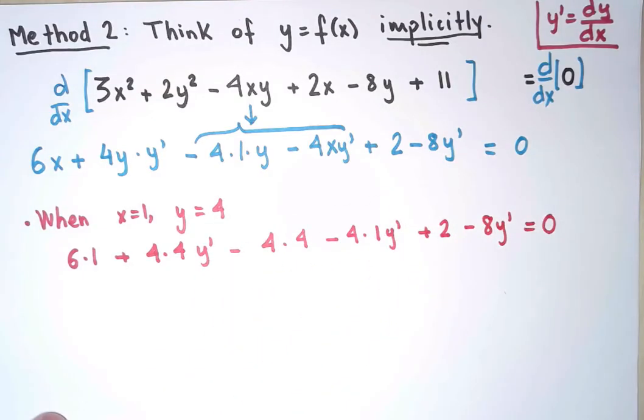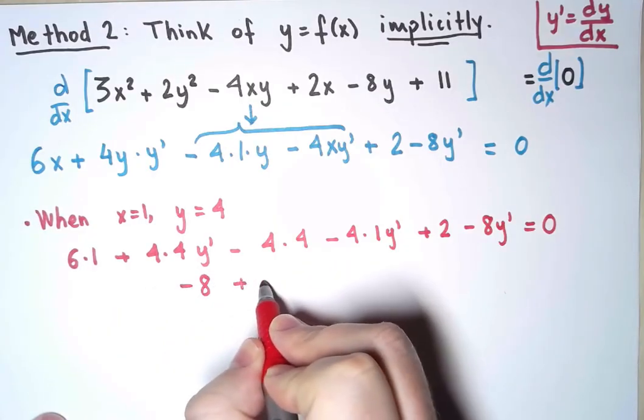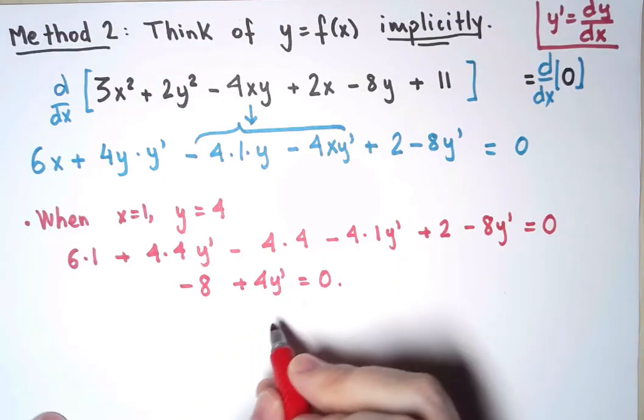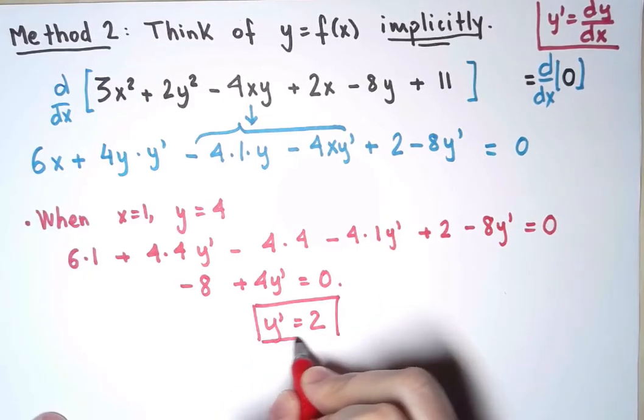And I can now solve for y' by grouping like terms together. So, I get that y' equals 2, and that's the answer. That's the slope I was looking for.